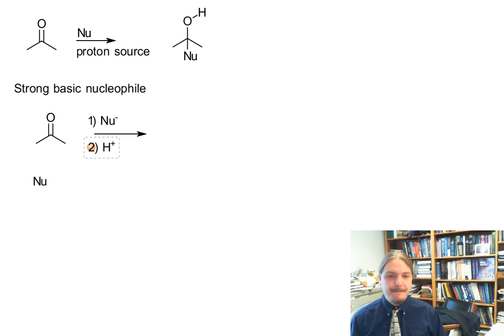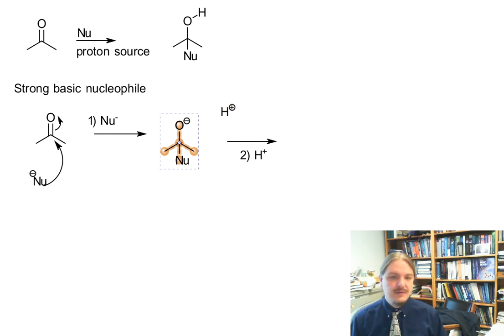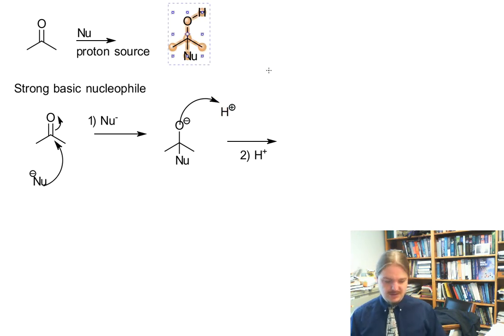So in this mechanism, nucleophilic attack happens first to form an alkoxide anion. And then the second step is proton transfer. So the addition of an acid neutralizes this reaction, protonates the alkoxide anion, and we get the addition product.